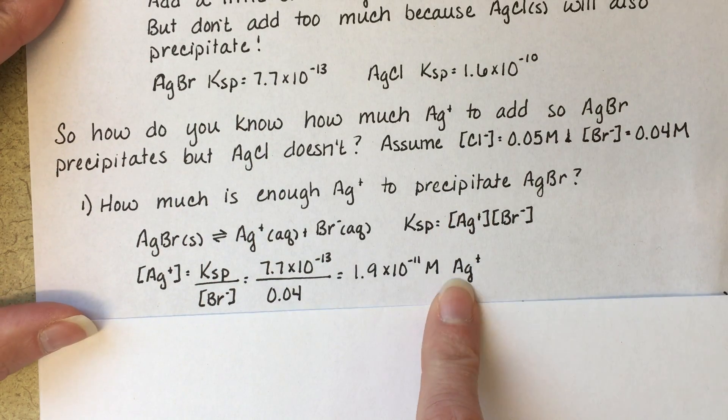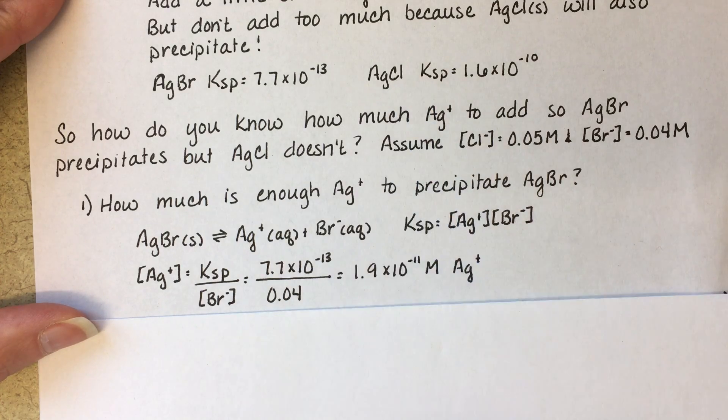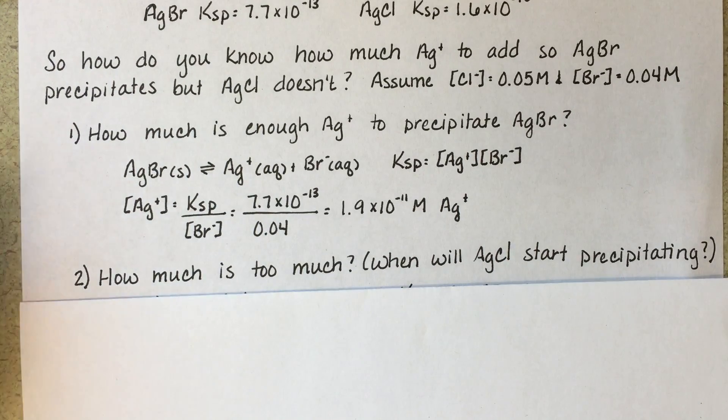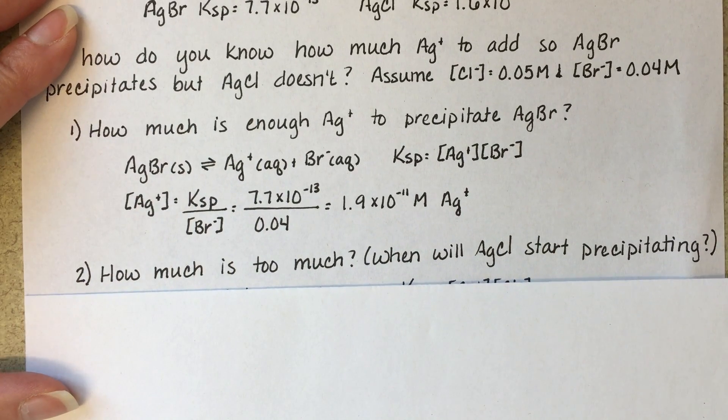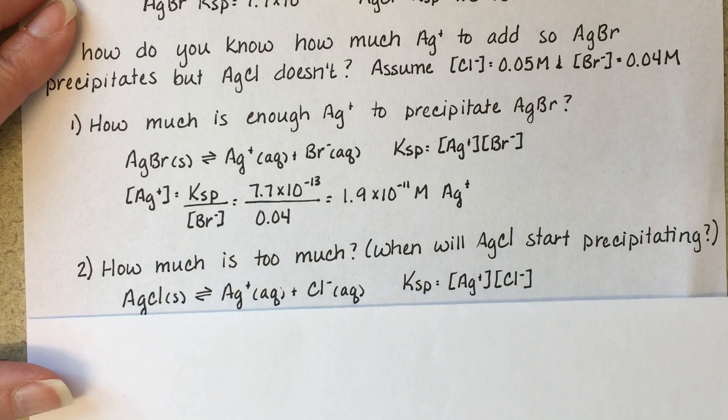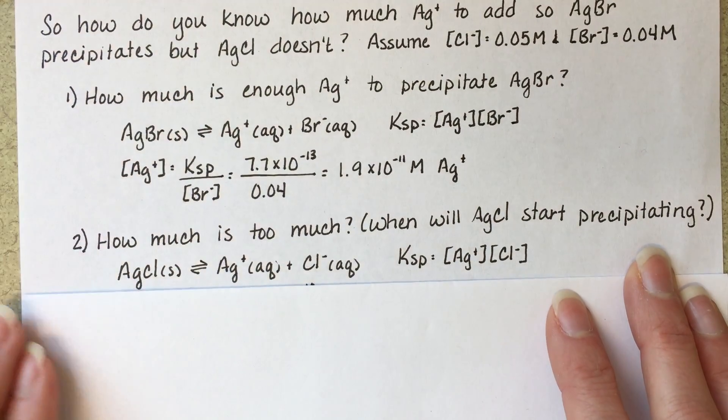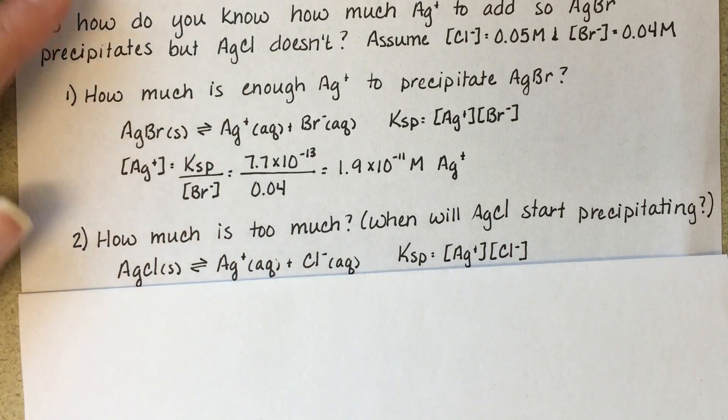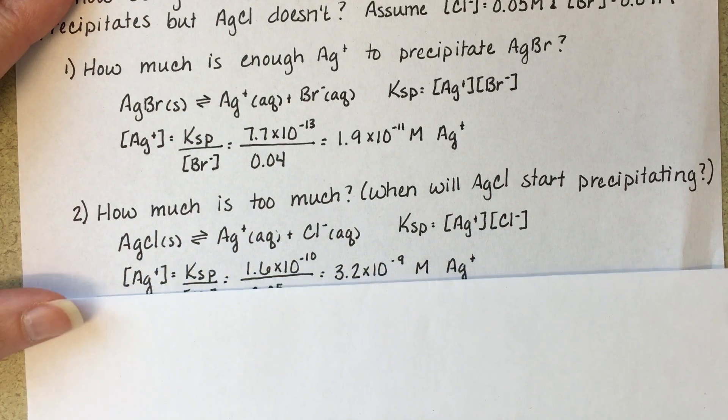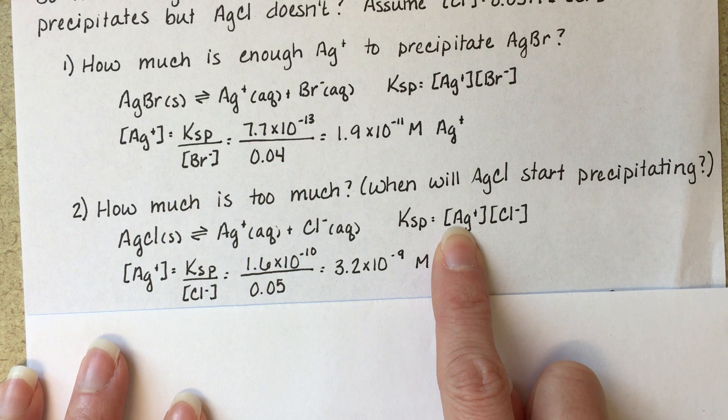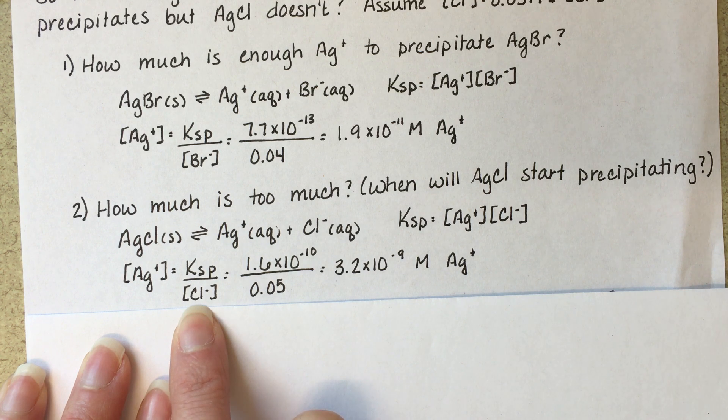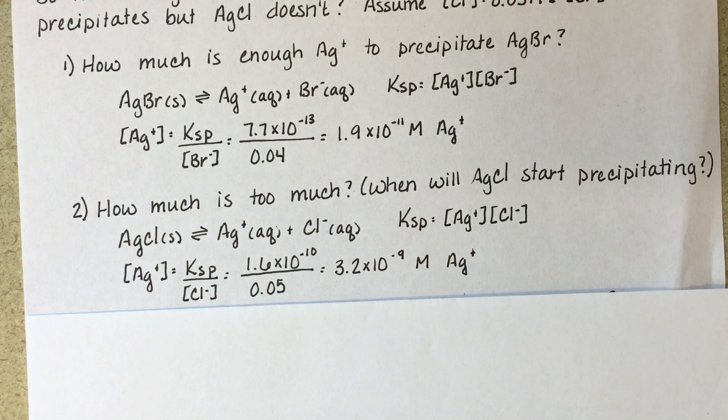But remember, we don't want to add too much silver because if we add too much, we're also going to precipitate silver chloride at the same time. So our second calculation is to figure out how much is too much. How much silver is too much? When will the silver chloride start to precipitate? We're going to do the same problem solving using the equation for silver chloride and the equilibrium expression for silver chloride and calculating how much silver will precipitate given the KSP of silver chloride and the concentration of chloride ions. And that is 3.2 times 10 to the minus 9.